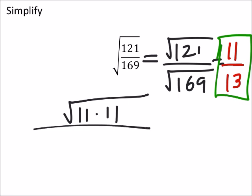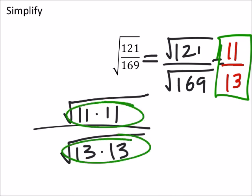...times 11, and 169 is 13 times 13. So what we need is for square roots, we need pairs of numbers.